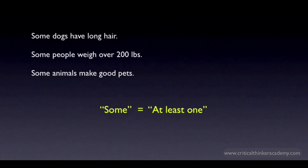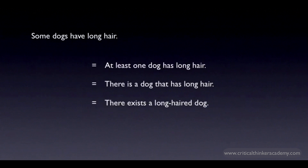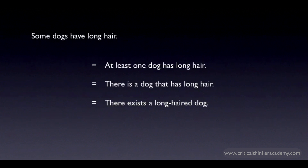There are a couple of equivalent ways of saying this. If you want to say 'some dogs have long hair,' you could say 'at least one dog has long hair,' or 'there is a dog that has long hair,' or 'there exists a long-haired dog.' These are all different ways of saying at least one.